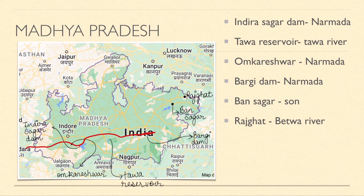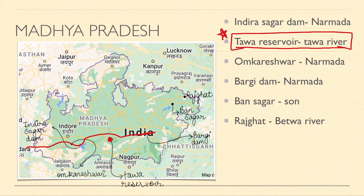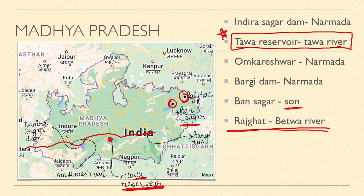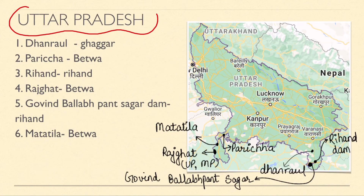Three dams are on the Narmada River in Gujarat. Gujarat is very important here. South of Narmada is Gujarat's territory.